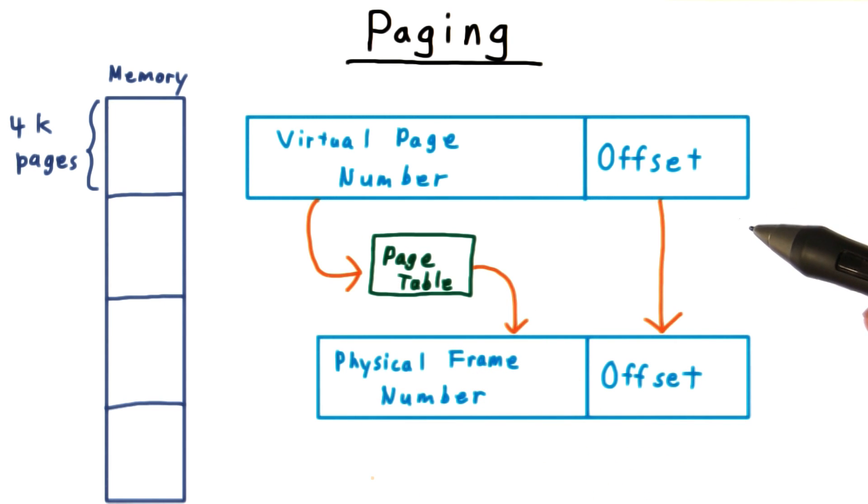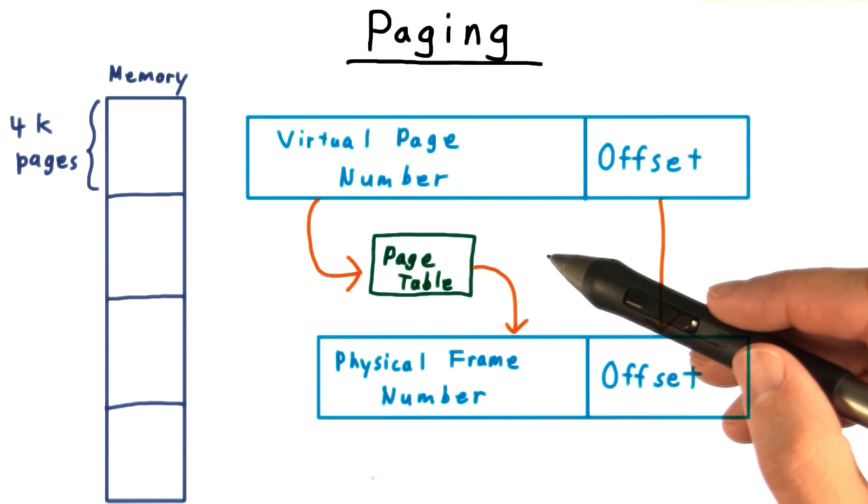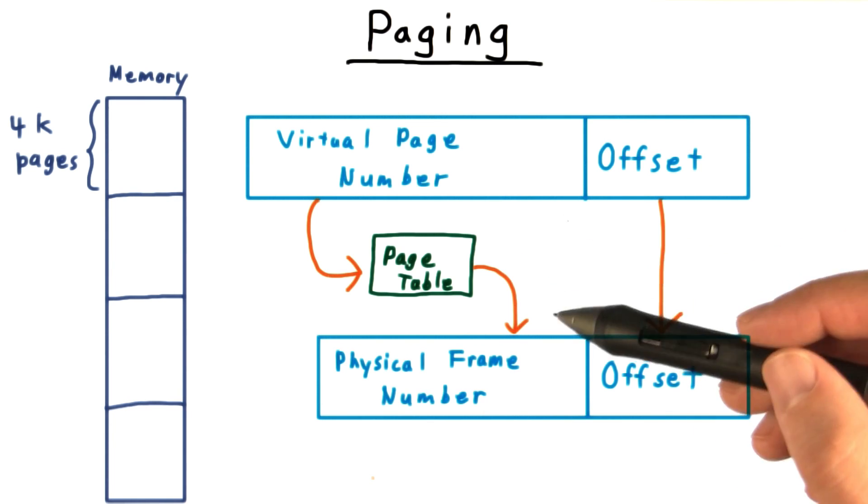Since we are mapping page for page between virtual and physical addresses, the offsets stay the same. We do need to translate page numbers, however. And for this, we use a data structure called the page table.